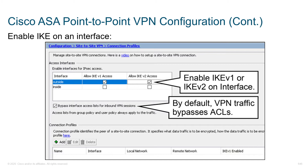Going through on the ASA, looking at the outside interface — do you still use IKE version 1? If you don't have legacy devices or a reason to support it, deselect it. Again, shut off anything we don't need. Do we want to allow IKE version 2? Yes. How about traffic coming through our VPN — should it ignore interface ACLs? If you've got an ACL outbound on your inside interface and traffic is being sent out, in this case VPN traffic would be trusted and bypass it. If you don't want that, deselect it.